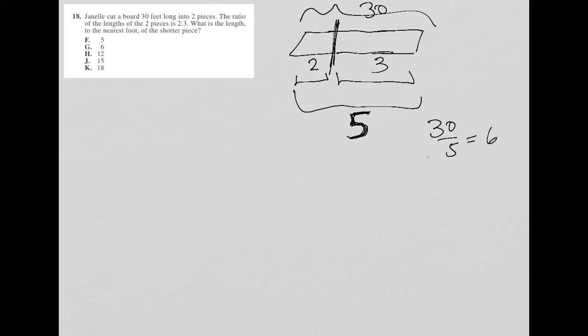And each one of these units, so these two, I have two six-foot units here. Then I have three six-foot units there. So here's my two to three ratio. So what is the length to the nearest foot of the shorter piece? Well, the shorter piece is the two, made up of two units of six feet each, which means my answer should be 12.